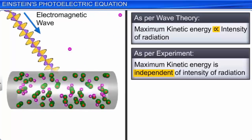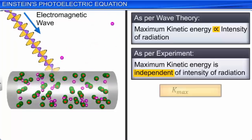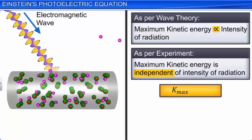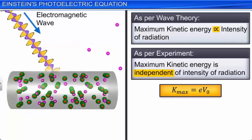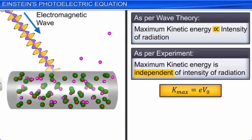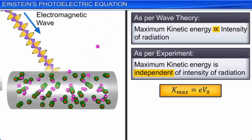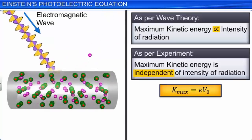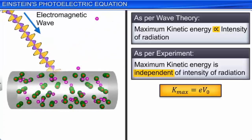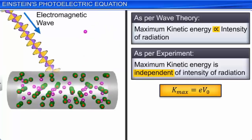We learnt earlier that the maximum kinetic energy K_max for the ejected electrons is equal to eV₀, where V₀ is the stopping potential. This shows that the kinetic energy of the photoelectrons is not dependent on the intensity of radiation, which contradicts the wave theory.